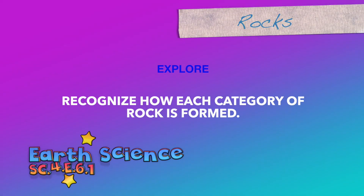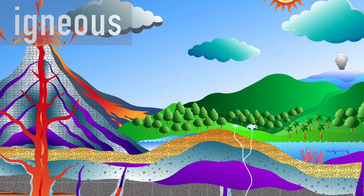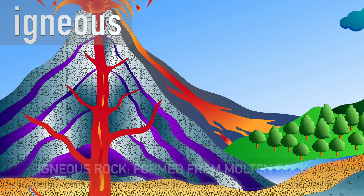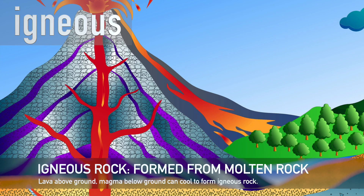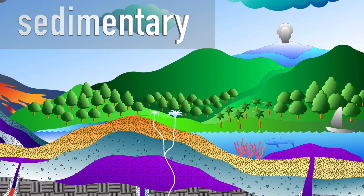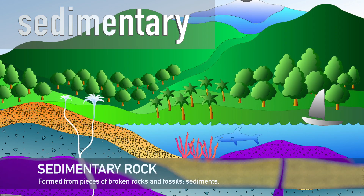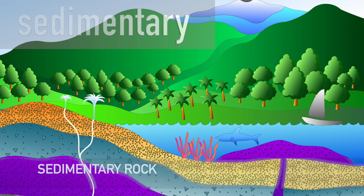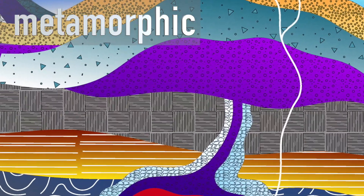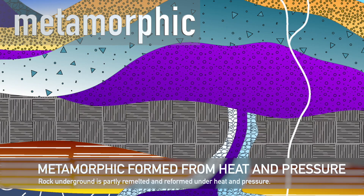Recognize how each category of rock is formed. Igneous rock is formed from melted rock — melted rock above ground is called lava, and melted rock below ground is called magma. Igneous rock can be formed either above or below ground. Sedimentary rock is formed usually under oceans from pieces of broken rock and sometimes the fossilized remains of animals and plants. Metamorphic rock is formed underground when rock is partly melted under heat and pressure and then cools to form new rock — not completely melted like igneous rock, but formed under heat and pressure.